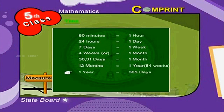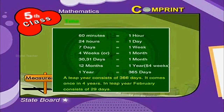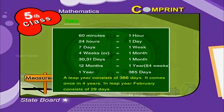One year is equal to 365 days. A leap year consists of 366 days and comes once in four years. In a leap year, February consists of 29 days.